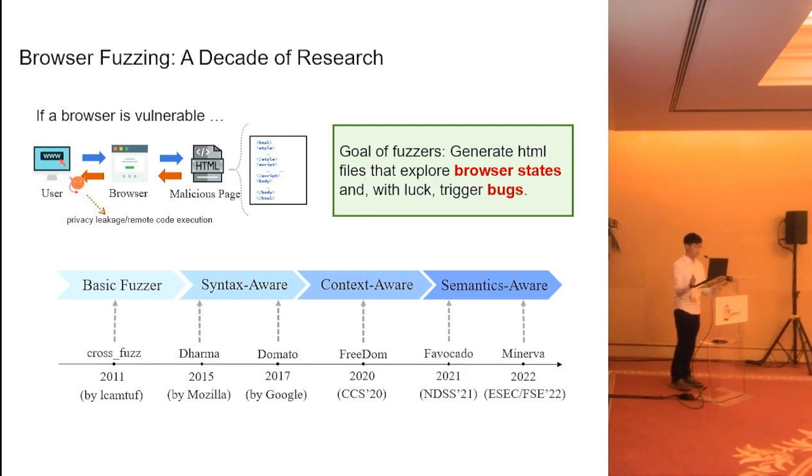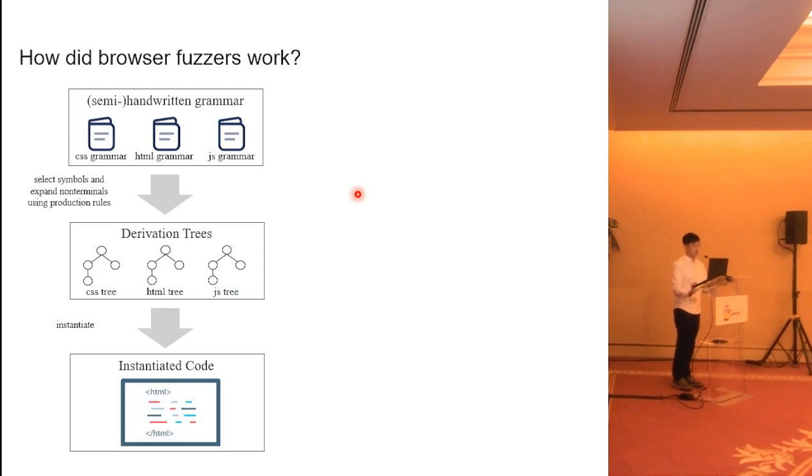Browser security is a very important topic because if a browser is vulnerable, attackers can leverage the vulnerabilities to attack any internet users. The goal of browser fuzzing is to generate a large number of HTML files which can explore browser states, and hopefully we can trigger some bugs and report them to browser developers and help them improve their code quality. There were several browser fuzzers proposed in the last decade, and they evolved over time and pay more and more attention to the semantics correctness of fuzzing. Generally speaking, browser fuzzing relied on handwritten grammar, usually in the form of context-free grammar.